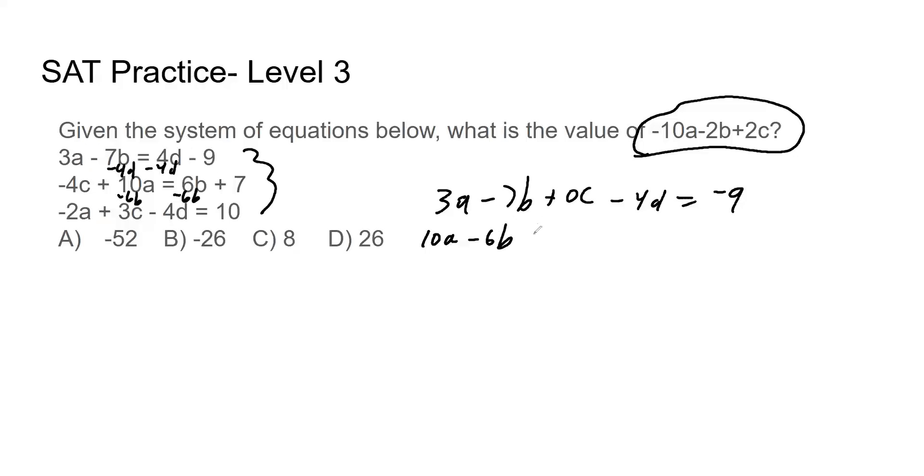Is there a C? Yes. Minus 4C. Is there a D? No. So I'm going to do plus 0D equals 7. I'm going to erase some of this just to give myself a little neater palette here. Next one, negative 2A.